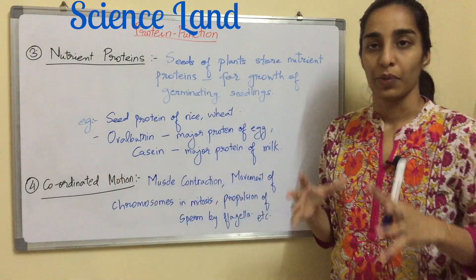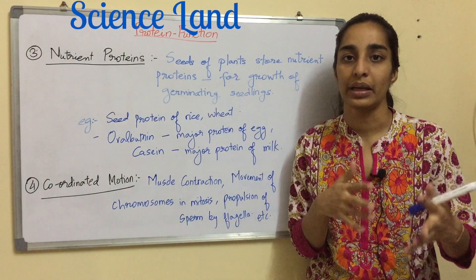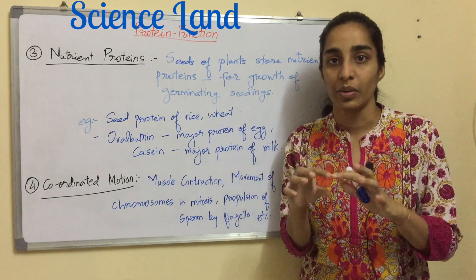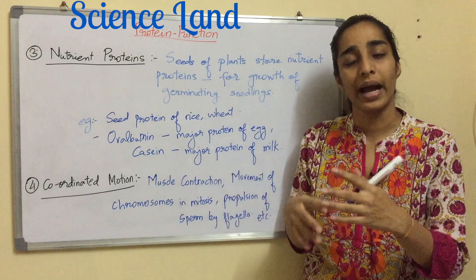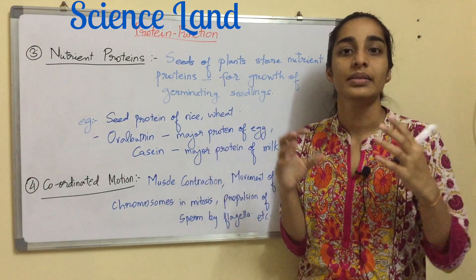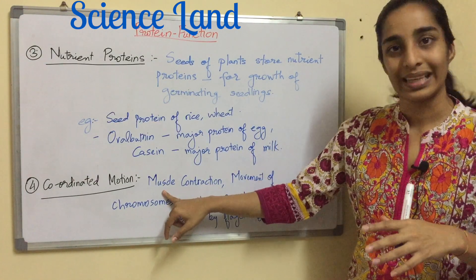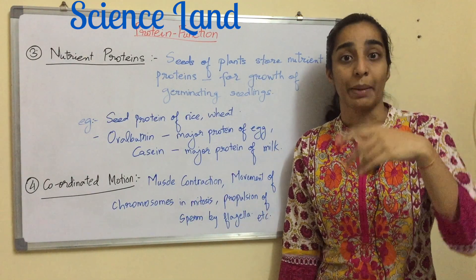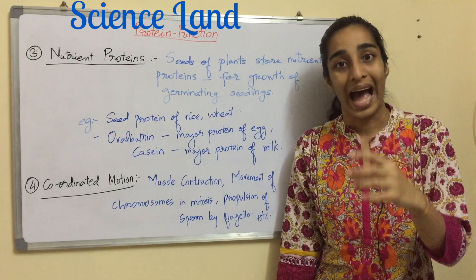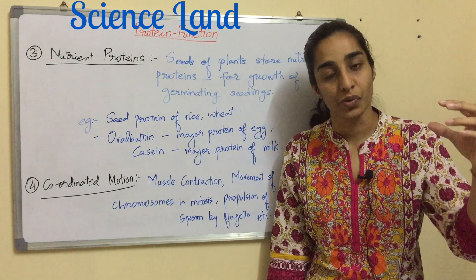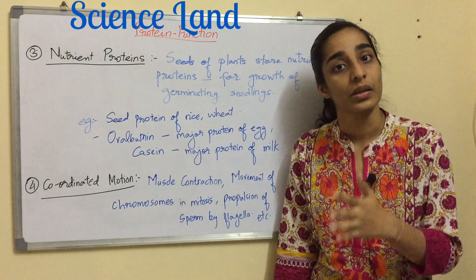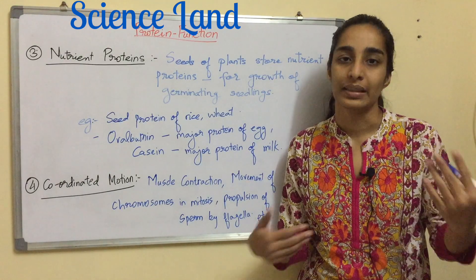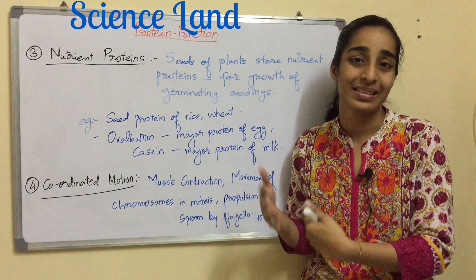Moving on — coordinated motion. We all know that muscles have their main component as proteins. When two muscles slide, protein filaments are involved in the contraction. Even during movement or motion, certain proteins are involved. First example: muscle contraction. Second: movement of chromosomes in mitosis — in anaphase, the replicated chromosomes are pulled back, and that movement is facilitated by certain proteins. Third: propulsion of sperm by flagella, assisted by a protein which makes up the flagella.